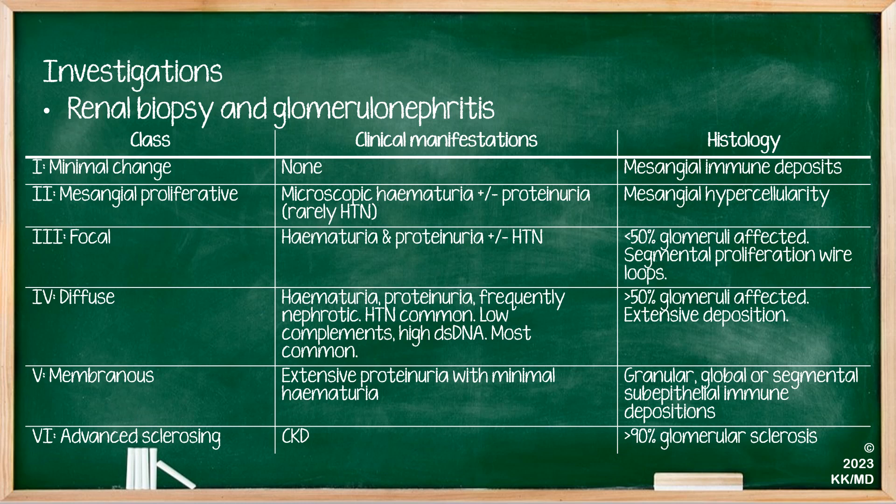Category five is membranous disease, where you will have extensive proteinuria with minimal haematuria — patients are losing quite a lot of protein in their urine. On histology, you will have granular, global or segmental sub-epithelial immune deposition. Category six is advanced sclerosing, very frequently seen as CKD in patients. By that point, unfortunately more than 90% of glomeruli will be sclerosed.